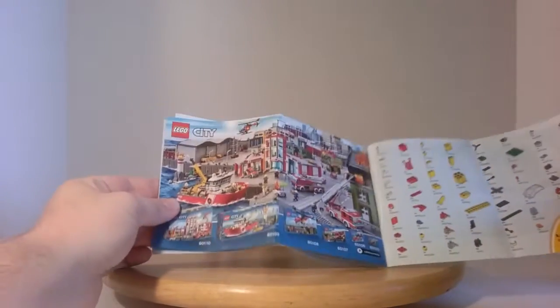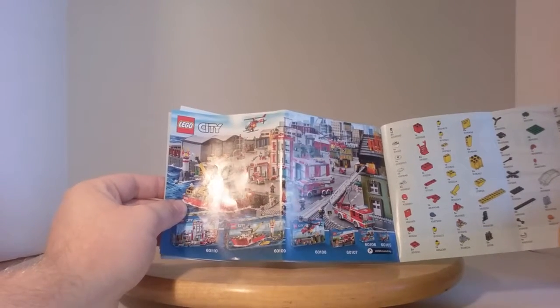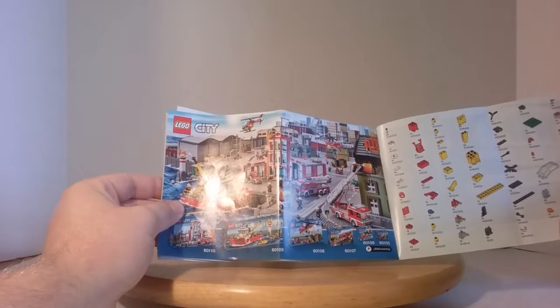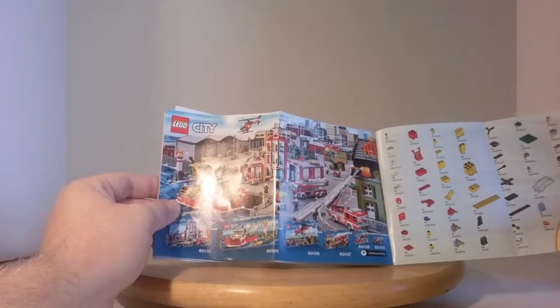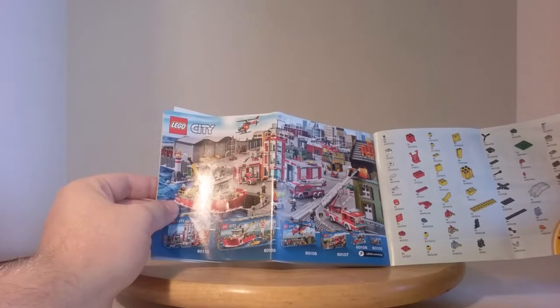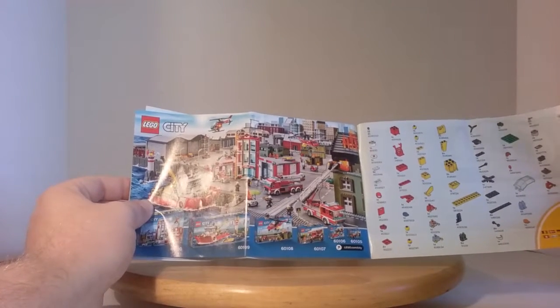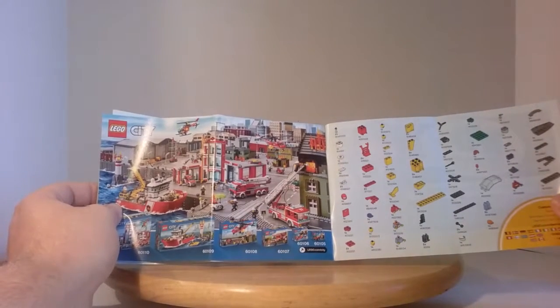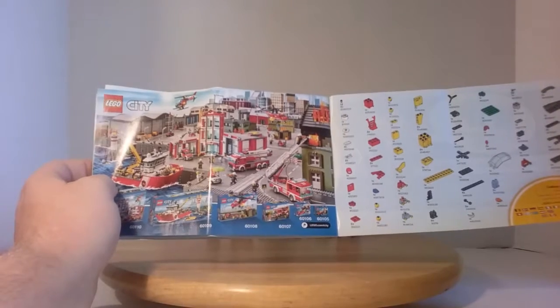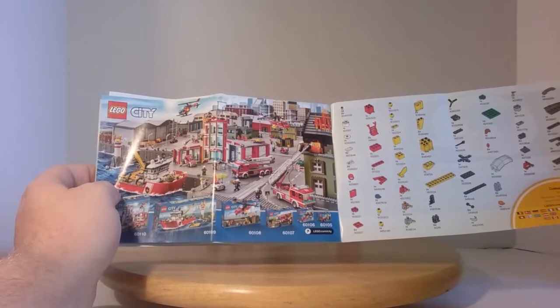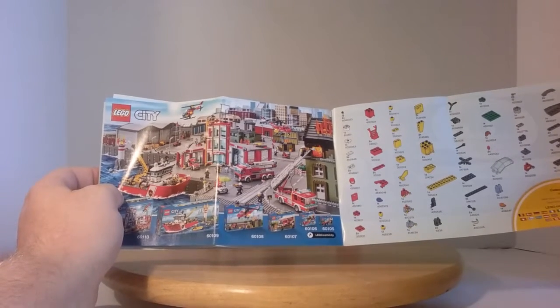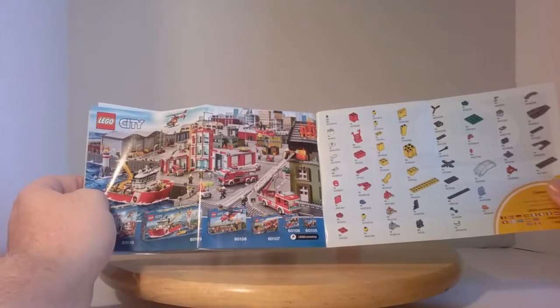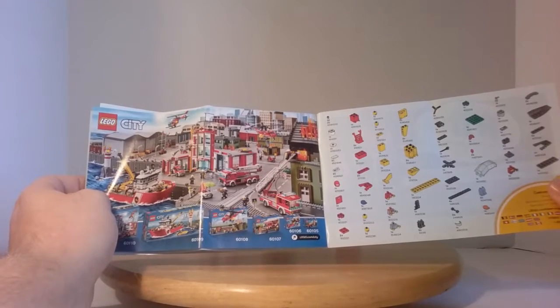The cargo plane with set 60101, and then the 60100 airport starter set which is what we're looking at today. Then it goes on to an advertisement for the Lego City fire sets, like the fire station with set 60110, the fire boat and lighthouse with set 60109, the fire helicopter and burning building with set 60108, the fire truck with set 60107.